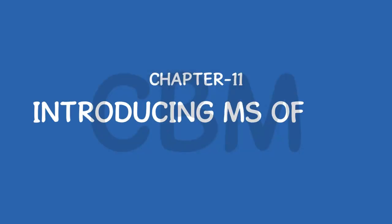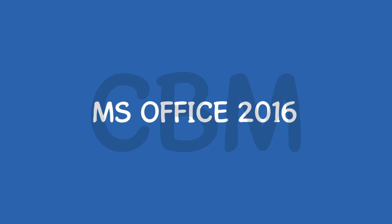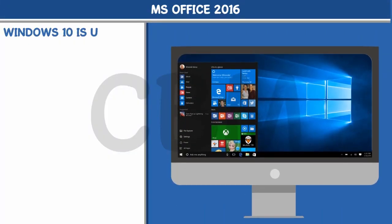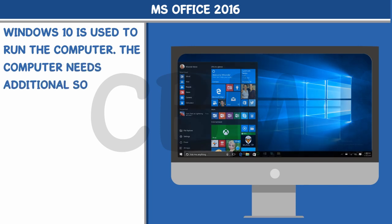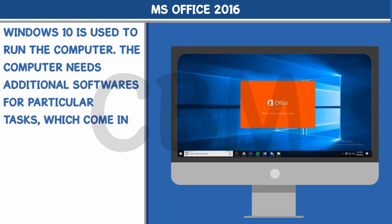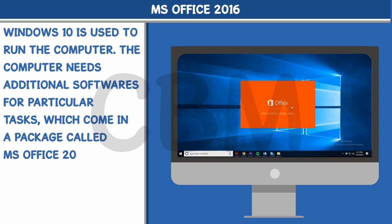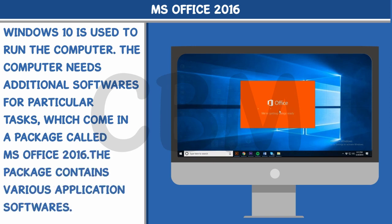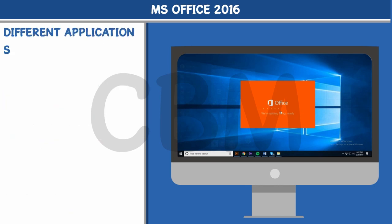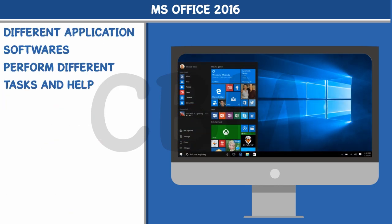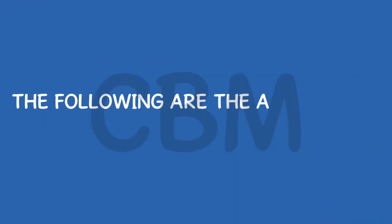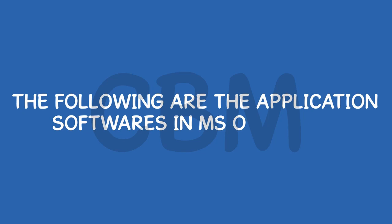Chapter 11: Introducing MS Office 2016. Windows 10 is used to run the computer. The computer needs additional software for particular tasks, which come in a package called MS Office 2016. The package contains various application softwares. Different application softwares perform different tasks and help us in our work. The following are the application softwares in MS Office 2016.